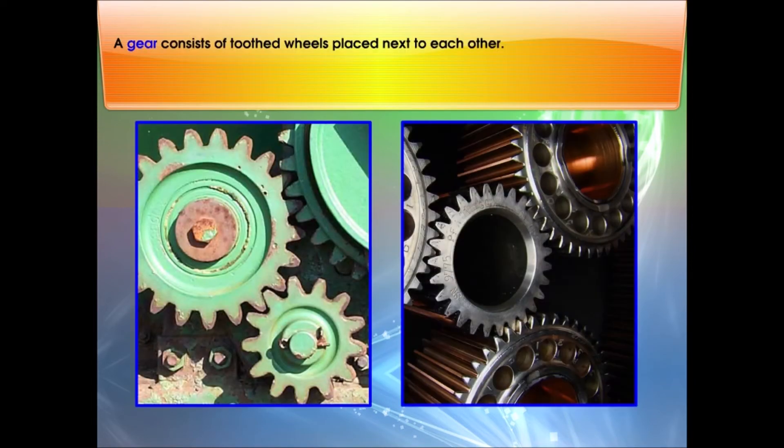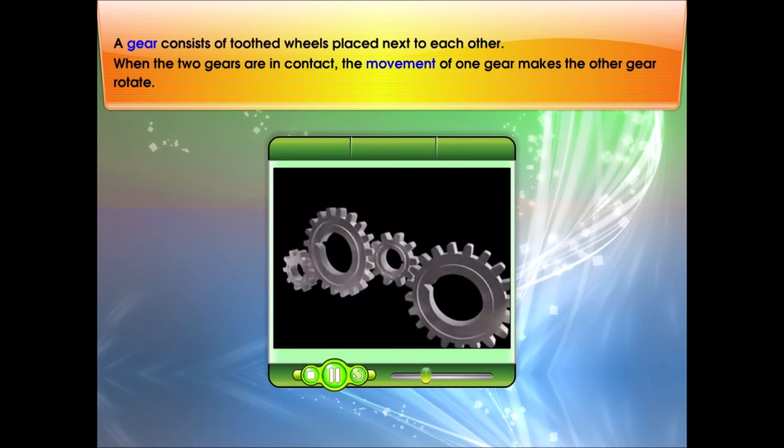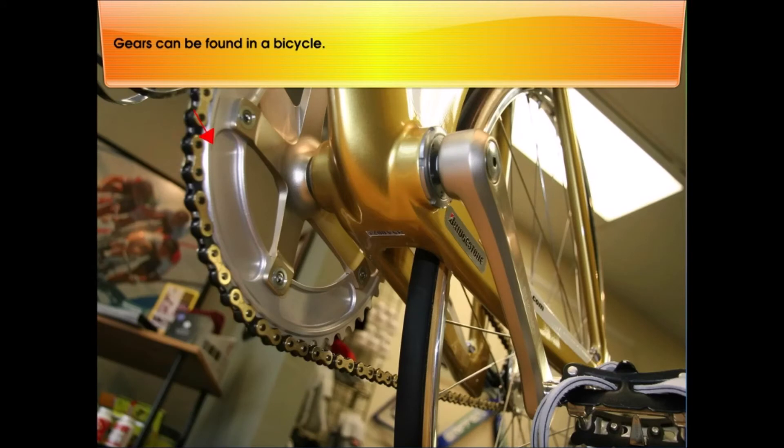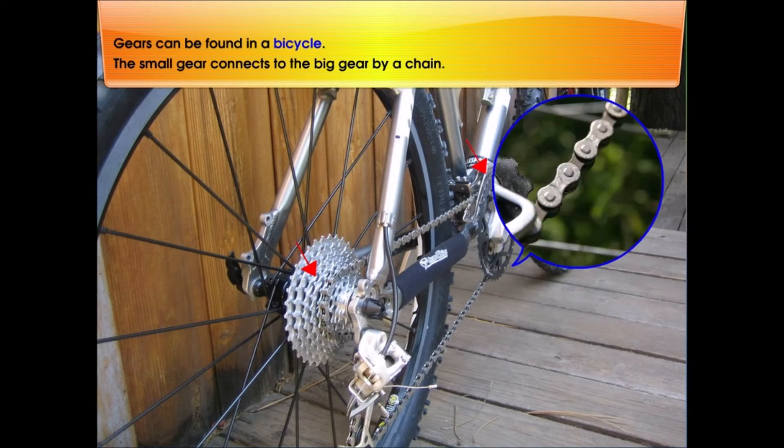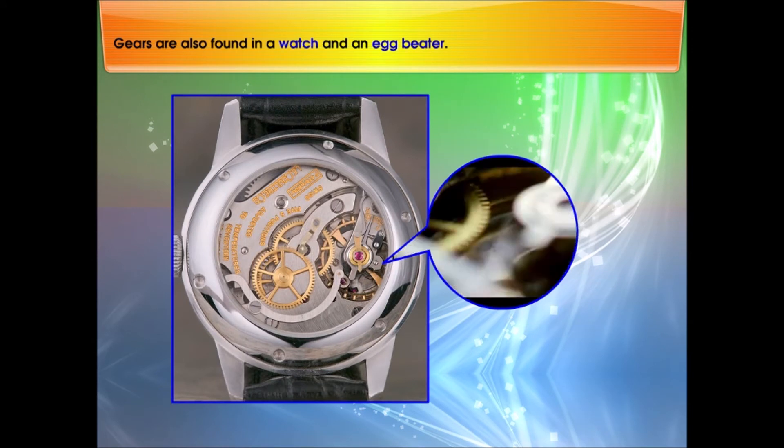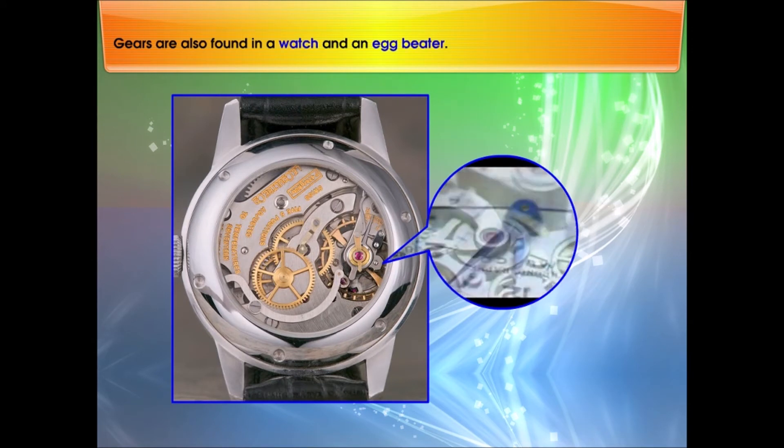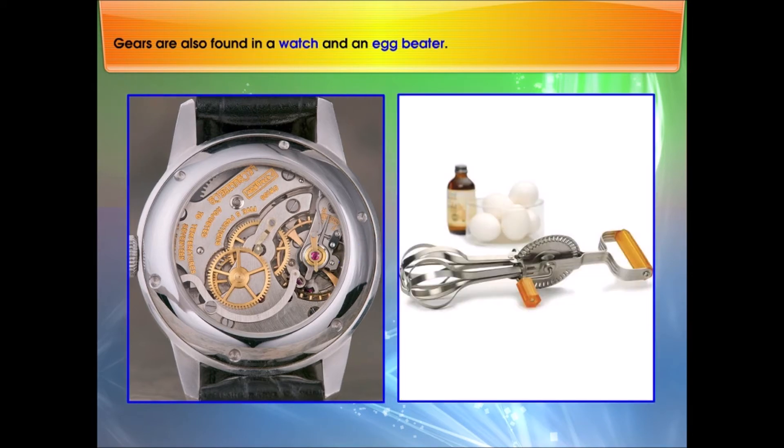A gear consists of toothed wheels placed next to each other. When the two gears are in contact, the movement of one gear makes the other gear rotate. Gears can be found in a bicycle. The small gear connects to the big gear by a chain. Gears are also found in a watch and an egg beater.